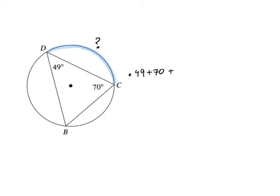That means that 49 plus 70 plus the measure of angle B will equal 180. So we can find the measure of angle B.